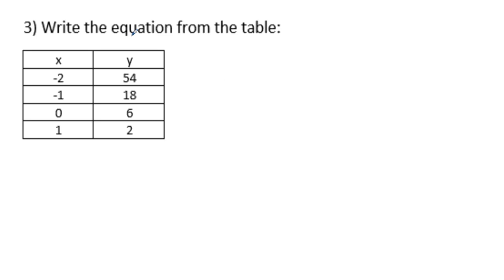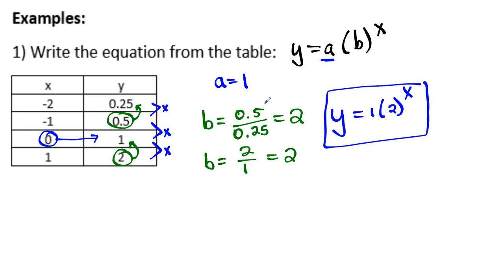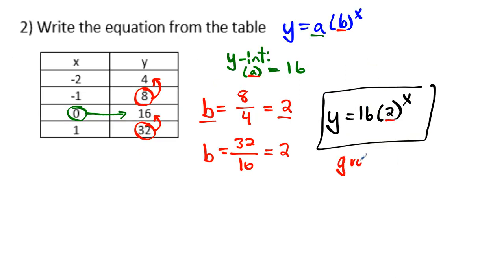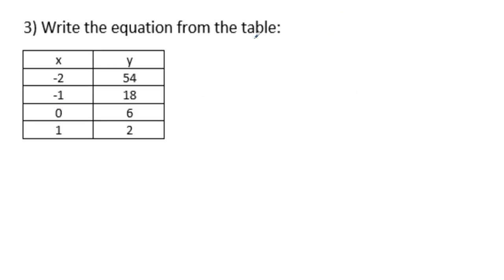Now let's do example 3. The Y values are going down, so I think this is a decay. We should note that when the B value is greater than 1, that's growth — like our previous B value of 2. But this one I believe will be a decay. Let's find out. We want to get it in the standard form.